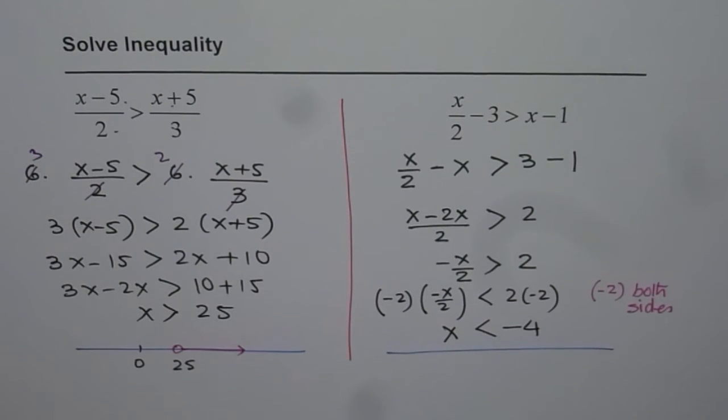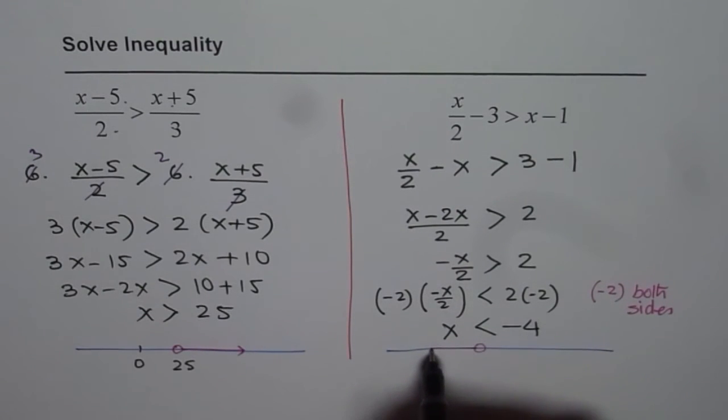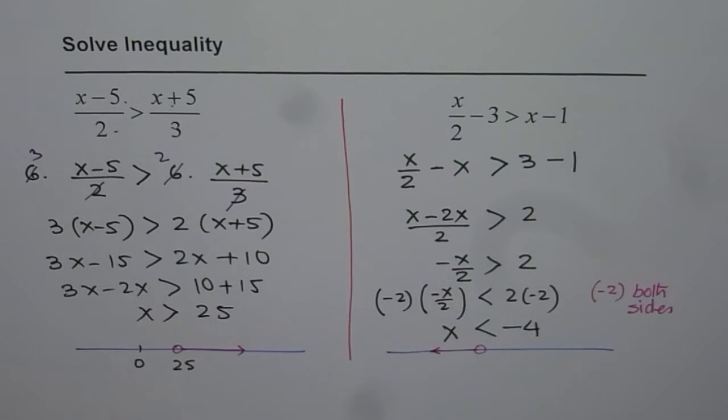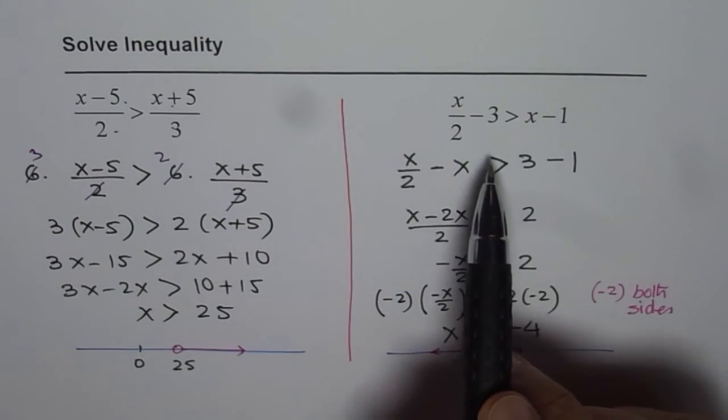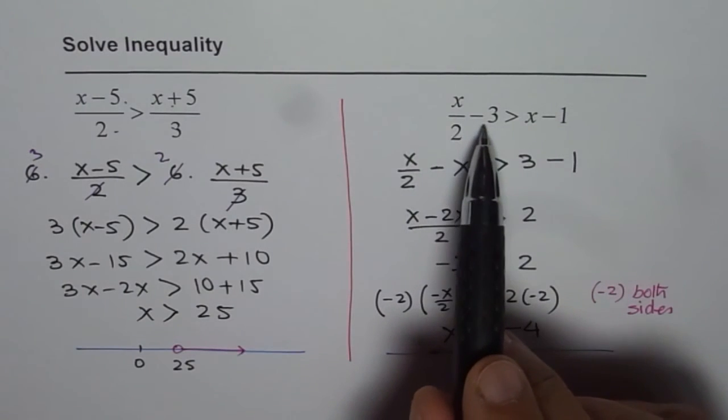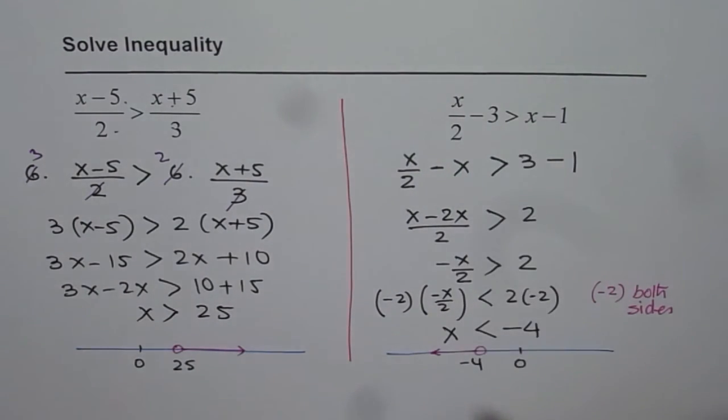On a number line, you can represent this solution as x is less than minus 4. Let us say this is 0, which is not a part of solution. So if I write 0 here, this inequality should not be satisfied. So what do I get? I get 0 minus 3, which is minus 3. Minus 3 greater than minus 1, which is incorrect.